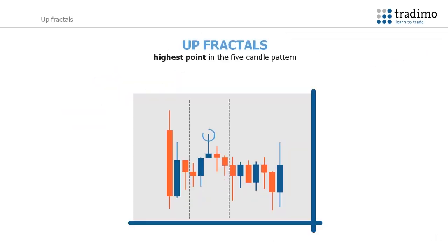An up fractal is formed when the middle candle is the highest point in the five candle pattern. There are two candles on the left hand side with highs lower than the centre candle's high, and two candles on the right hand side with the highs also lower than the centre candle's high.